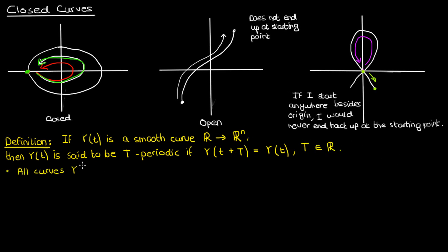Given this definition, every smooth curve gamma is zero periodic because gamma of t plus zero is obviously equal to gamma of t. It's the same point. Of course, since gamma must be a smooth curve for this definition to apply, we can't have any funny discontinuities that might result in gamma not being zero periodic.